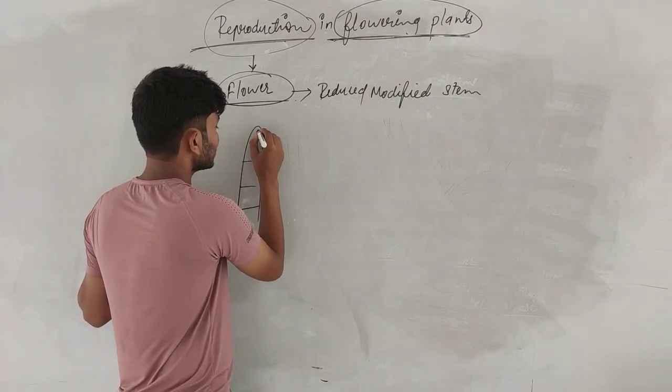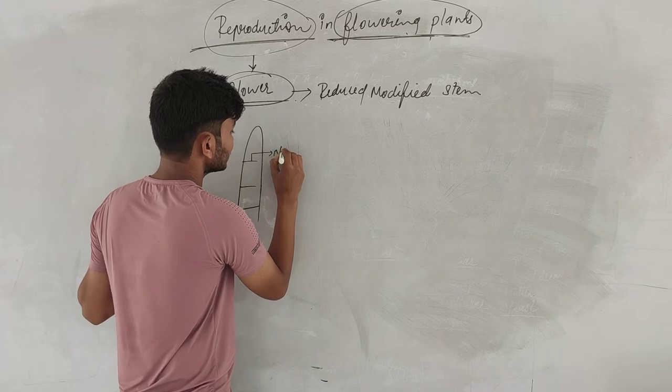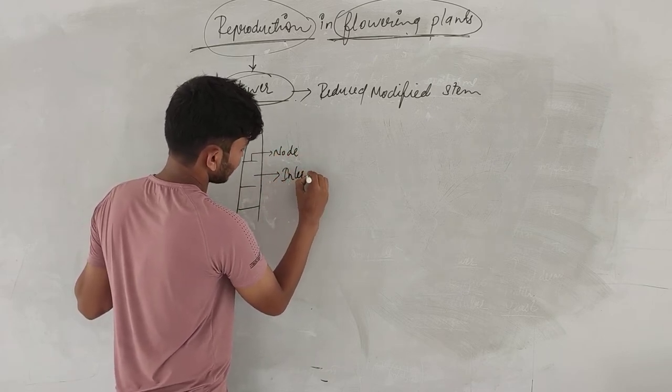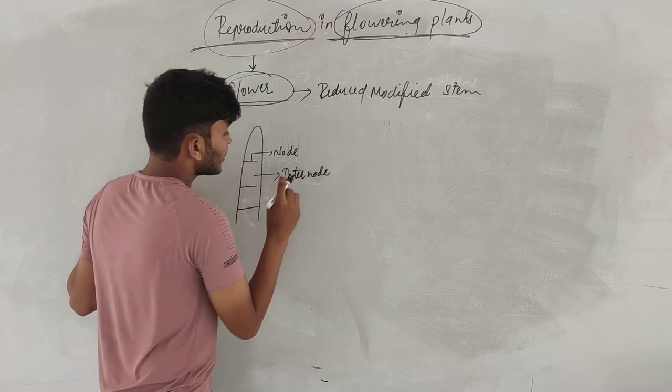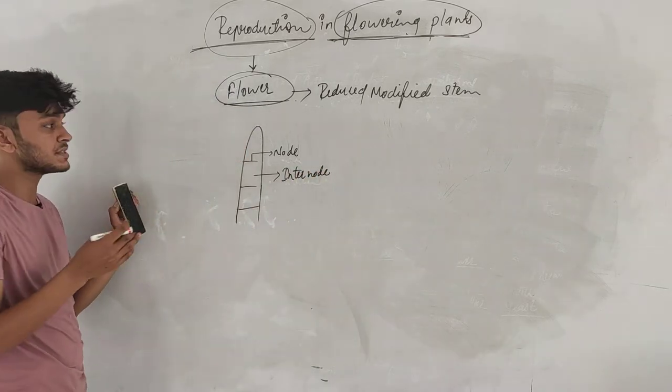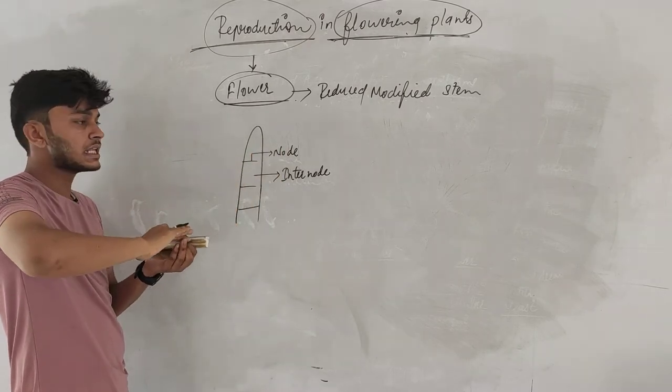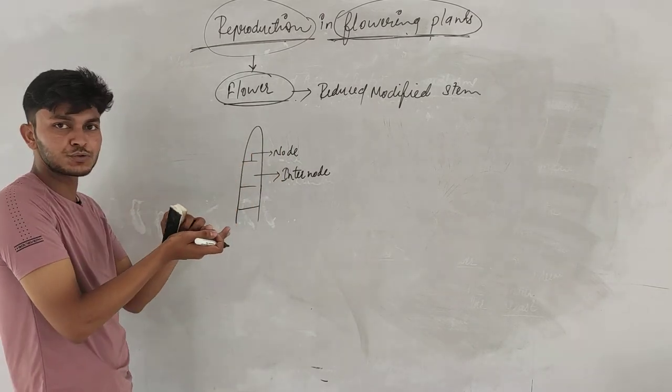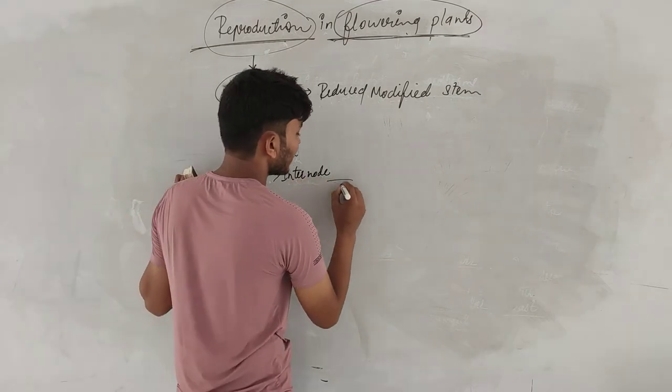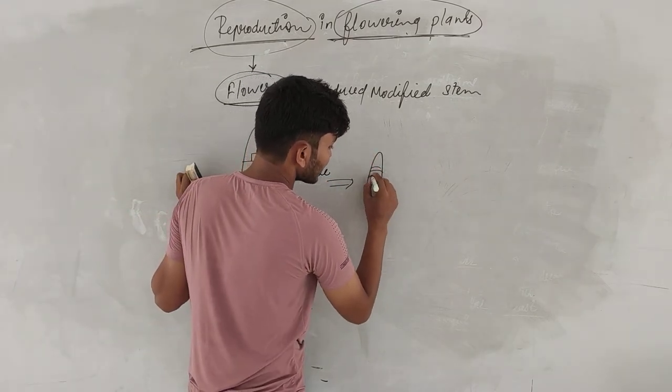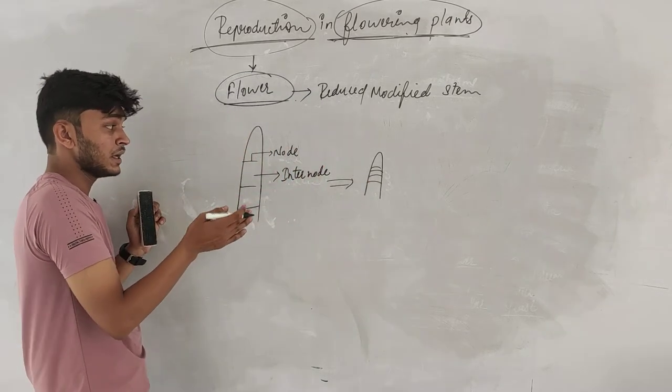This one is node and that one is inter-node. During developmental process, what happens? The nodes will suppress. Nodes will suppress. They will come closer. After the other one is closed, they will come closer.